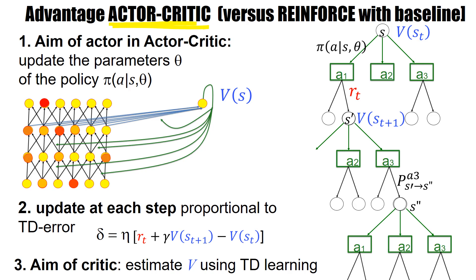So what's the aim? The aim of the actor is to update parameters theta of the policy. The outputs of the network are these different action choices. These action choices depend on parameters and these are the parameters we want to optimize so as to maximize the return.